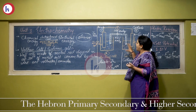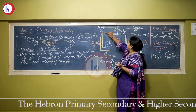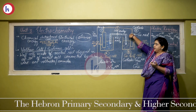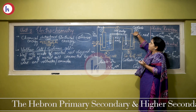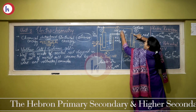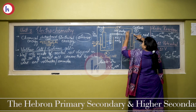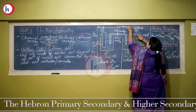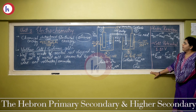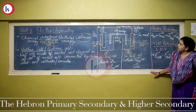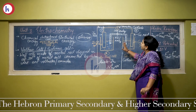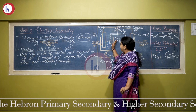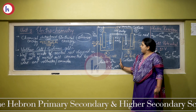Both the half cells A and B are connected via an electric wire to each other. That is, the zinc rod is connected to the copper rod via an electric wire. And here, to check the flow of current, we are connecting either an ammeter or a voltmeter. When the switch is on, the following reactions occur at the respective half cells.